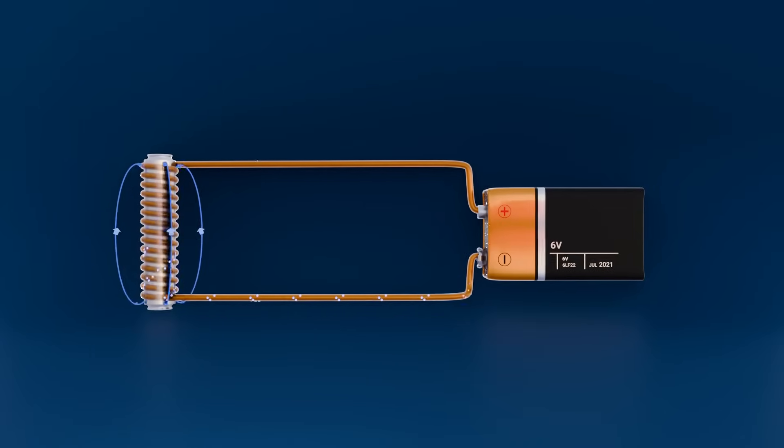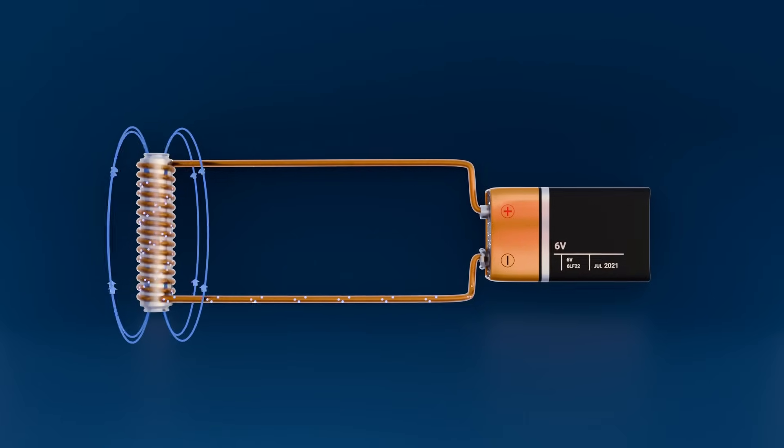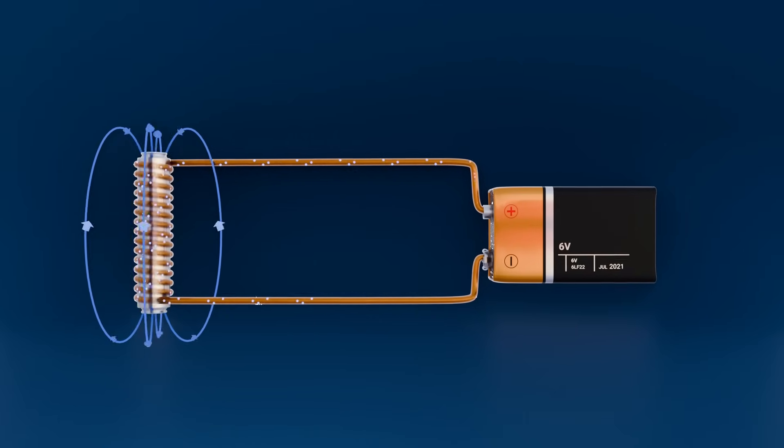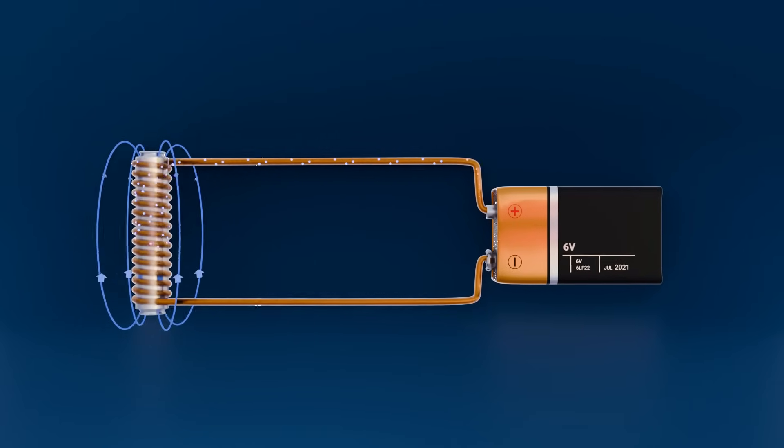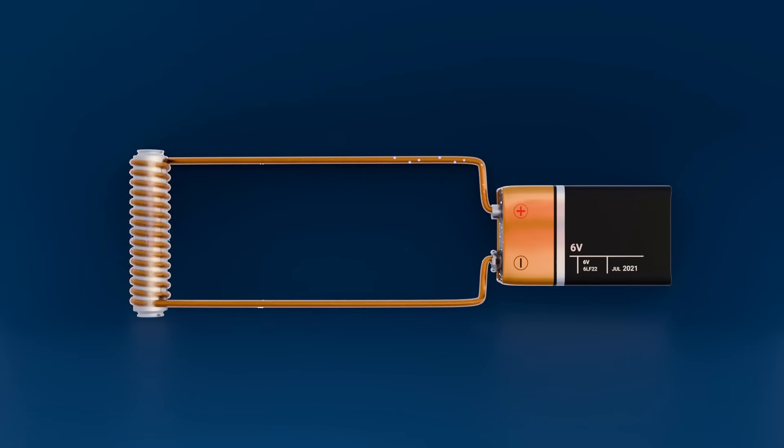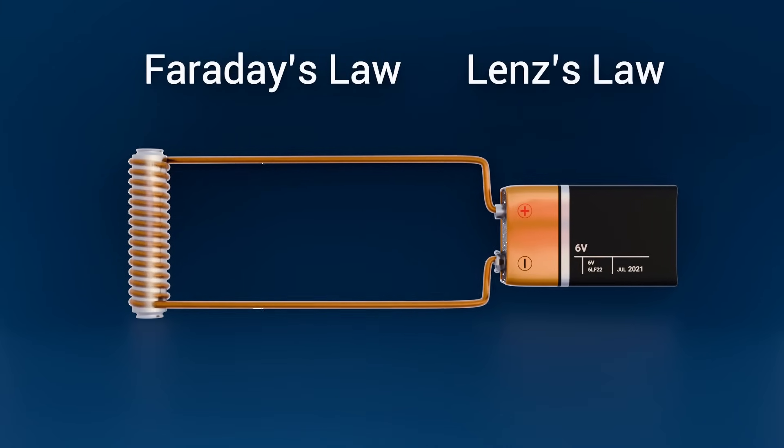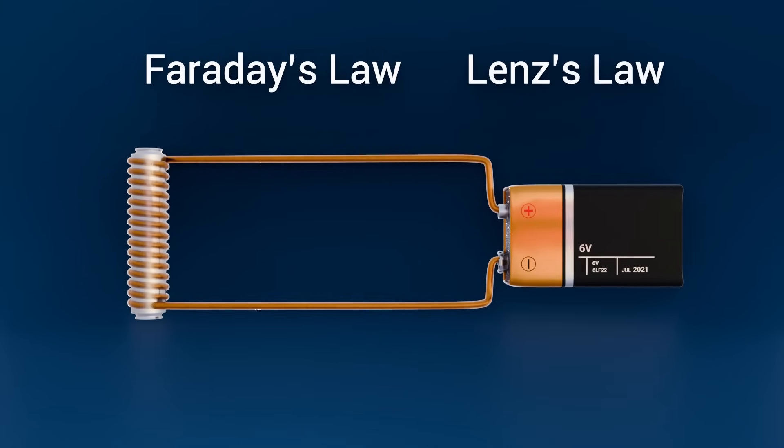If the current changes, the inductor resists that change by inducing a voltage in the opposite direction, also known as opposite polarity. This is explained by Faraday's law and Lenz's law. This can be shown in the following equation.